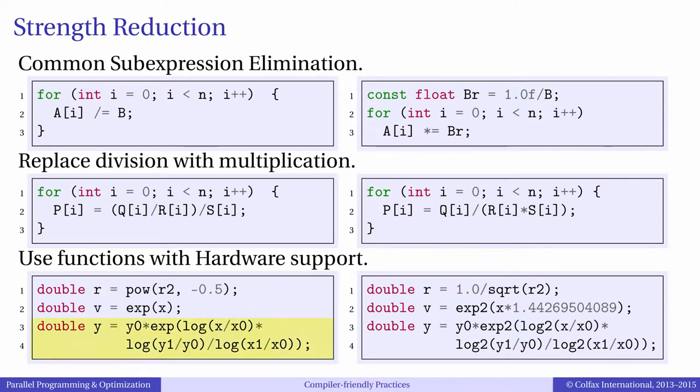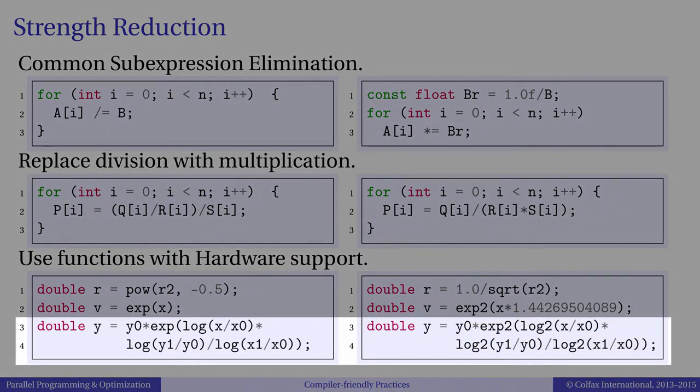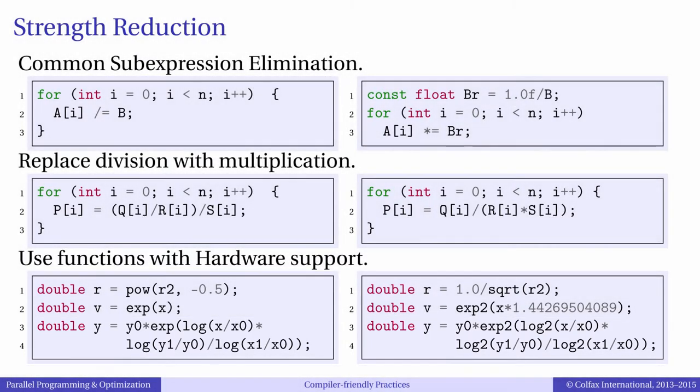Here is an example where we can replace all natural-based logarithms and exponentials with their base 2 counterparts and obtain an equivalent result. This expression interpolates a function between points y0 at x0 and y1 at x1 using a power law approximation. The optimized expression with strength reduction computes significantly faster, and the exact speedup depends on the required precision.